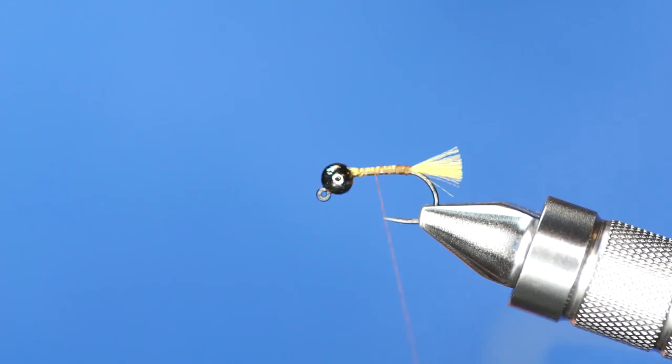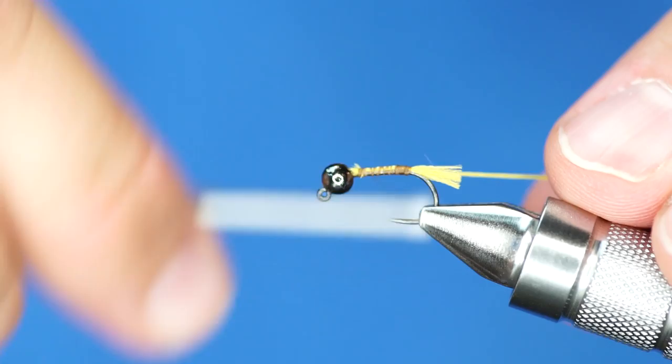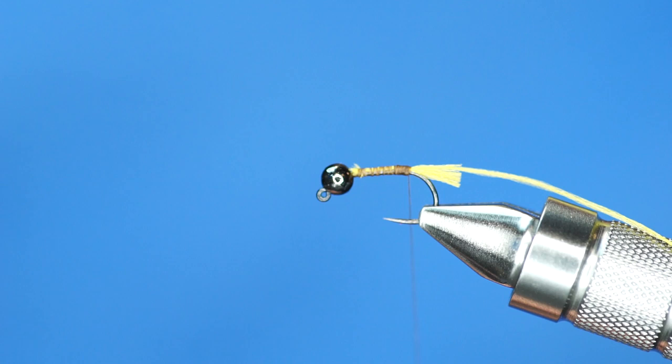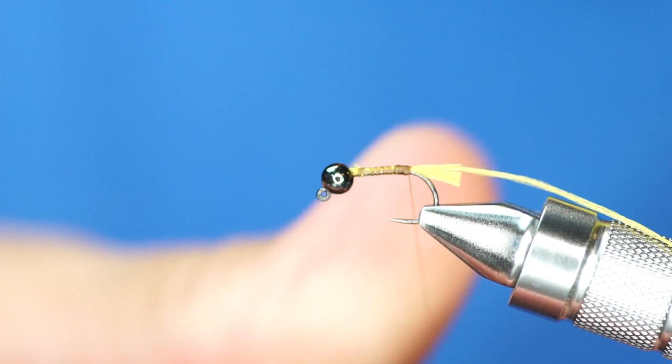So to keep that yellow theme as well, I'm just going to take some more of this Uni 3-A op, and I'm going to use that as a rib for this fly. So hopefully you'll get a sense for how quick of a tie this fly is.